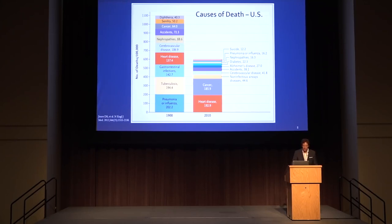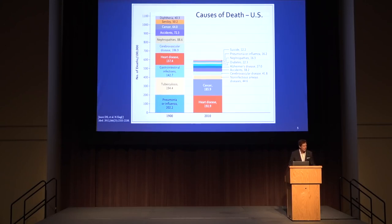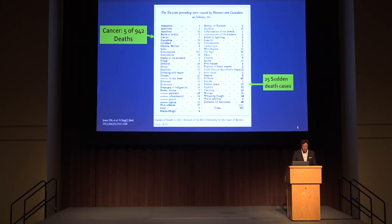We're looking at causes of death, 1900 versus 2010 — this is Joan's paper from 2012. Notice on the left, in 1900, the top three causes of death — pneumonia, tuberculosis, gastrointestinal infections — were all infectious. Whereas in 2010, seven of the top ten causes of death are chronic disease: heart disease, cancer, COPD, diabetes, and so on. We'll come back to this.